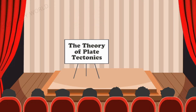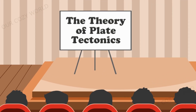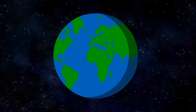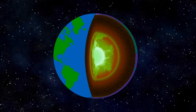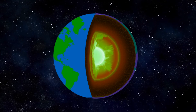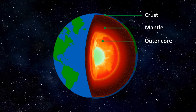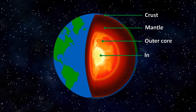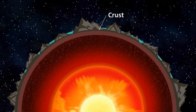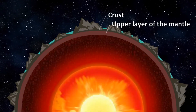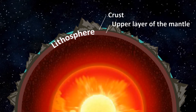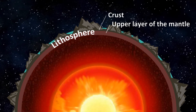Therefore, the theory of continental drift was later replaced by the theory of plate tectonics. It sounds complicated and super scientific, but it's actually quite simple. Our planet is composed of four distinct layers: the crust, the mantle, the outer core, and the inner core. The crust and the upper layer of the mantle form the lithosphere — the Earth's rigid outer shell.